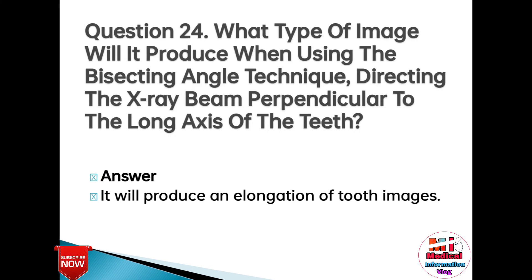Question 24: What type of image will be produced when using the bisecting angle technique, directing the X-ray beam perpendicular to the long axis of the teeth? Answer: It will produce an elongation of tooth images.